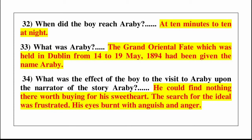Question number 33: what was Arabi? Answer is the Grand Oriental Bazaar which was held in Dublin from 13 to 19 May 1894 had been given the name Arabi. Next question: what was the effect of the boy's visit to Arabi upon the narrator? Answer is he could find nothing there but buying for his sweetheart. The search for the ideal was frustrated. His eyes burnt with anguish and anger.